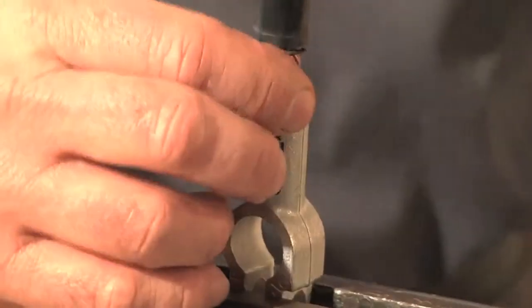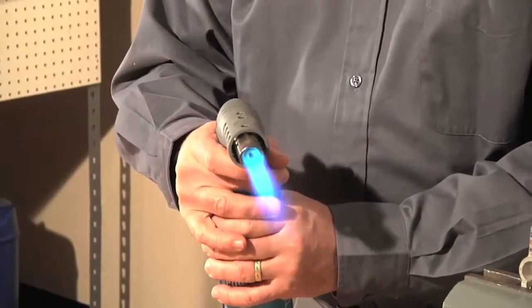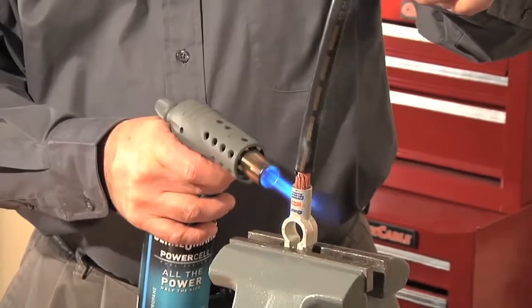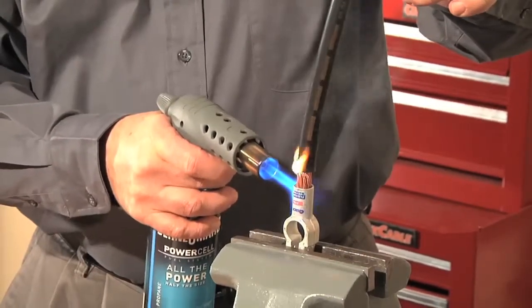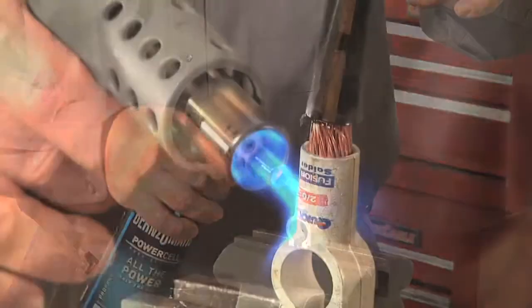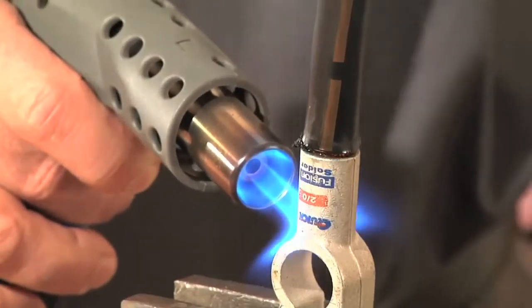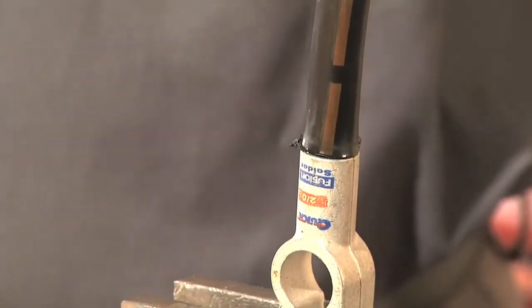Second, insert the cable into the connector. Using any propane torch, heat the connector, which melts the pre-measured flux and solder inside the connector and bonds it to the cable. Before we move on to the final two steps, here are a couple of tips that will help you.